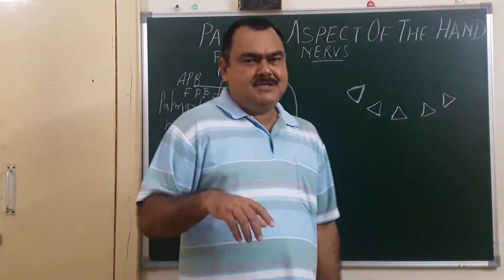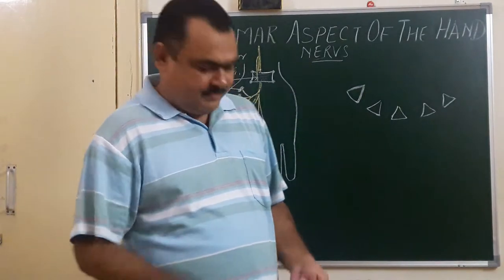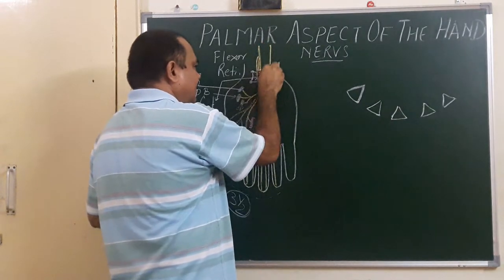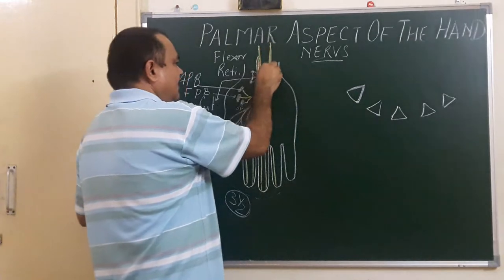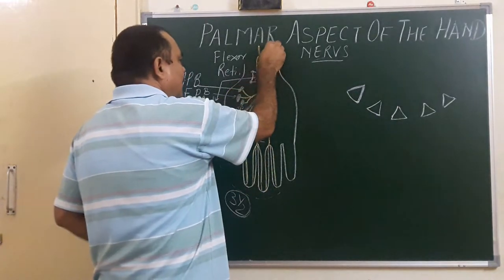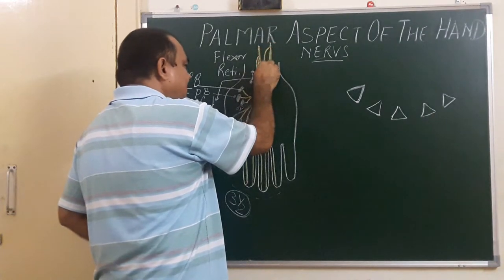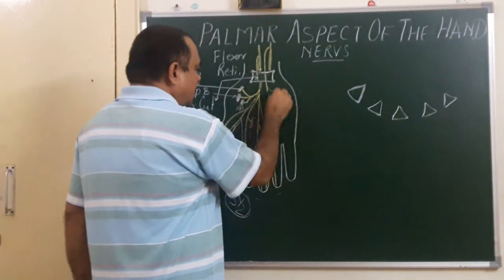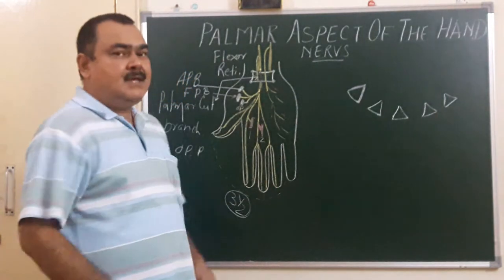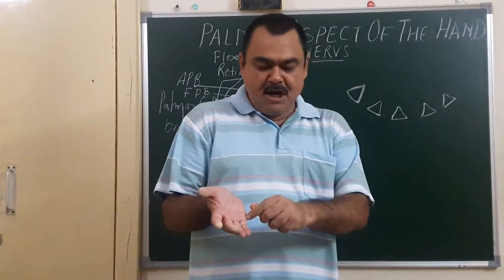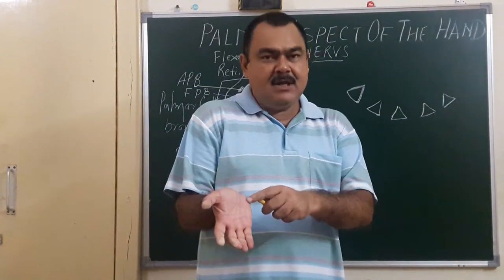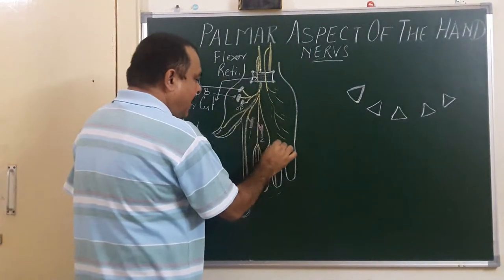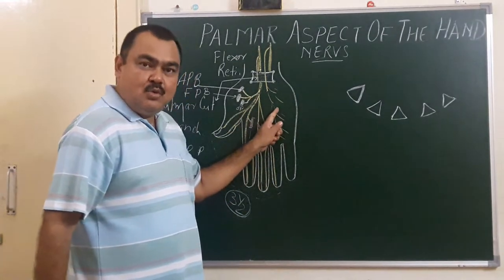Now we will discuss the ulnar nerve, which gives supply to the palm. Here is the course of the ulnar nerve in the forearm. It gives a palmar cutaneous branch, which gives supply to the skin over the medial one-third of the palm, including the skin of the hypothenar eminence. This one-third part of the palm is supplied by this palmar cutaneous branch.